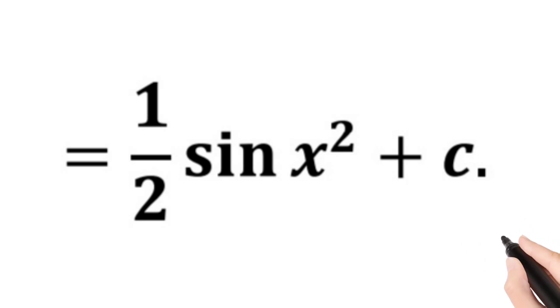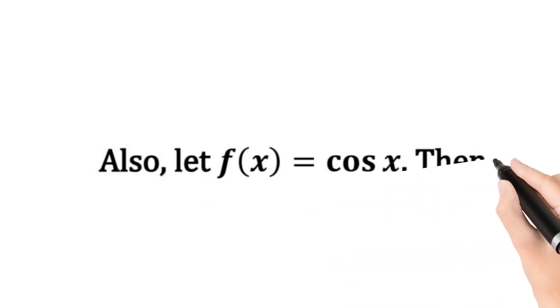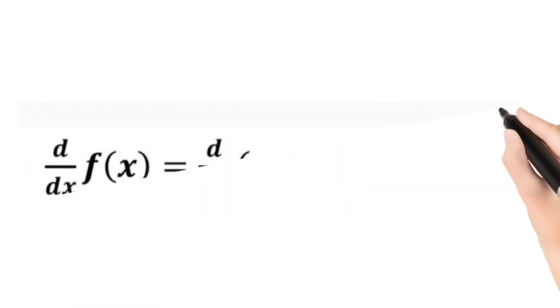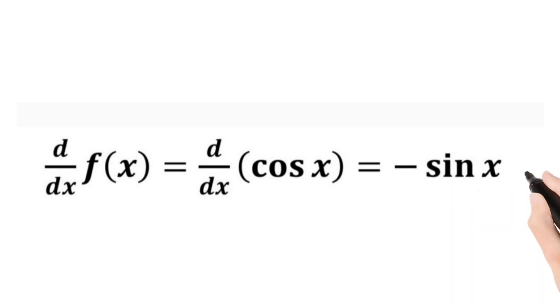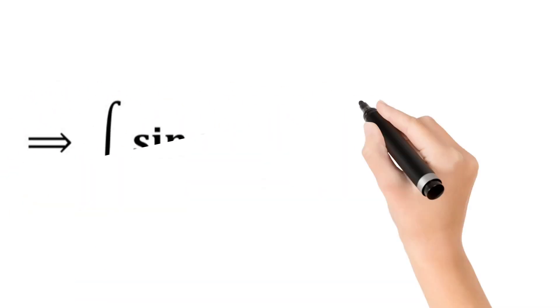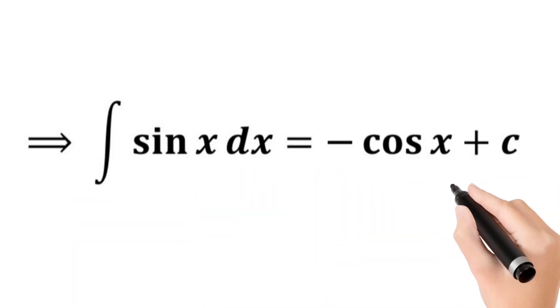Also, let f(x) be equal to cos x. Then, d/dx of f(x) is equal to d/dx of cos x, and that's equal to minus sin x. So this implies that the integral of sin x dx is equal to minus cos x plus c, since we know that integration is like the reverse of differentiation.